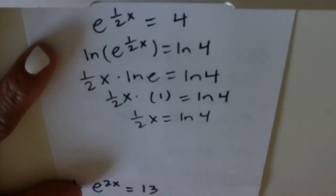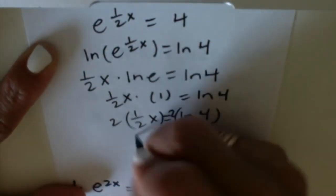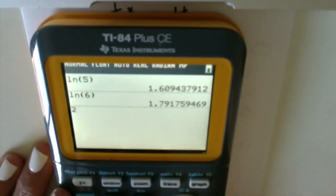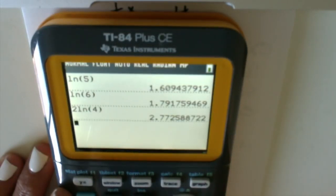To solve for x, we're going to times both sides by 2. 2.2 natural log of 4. So you get 2.773.